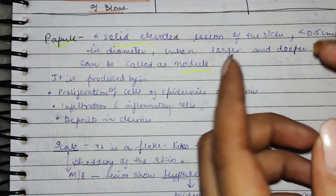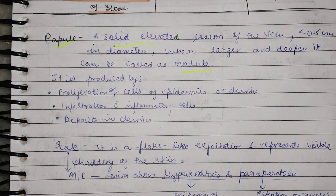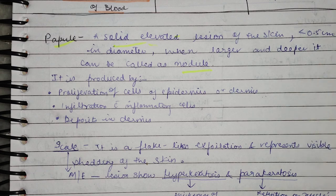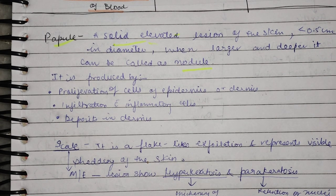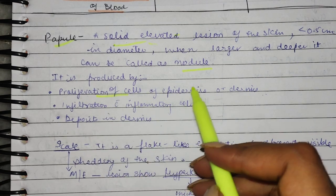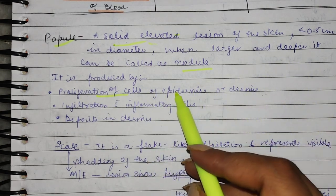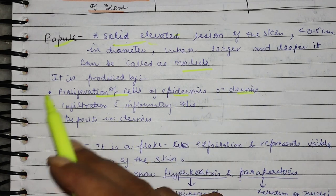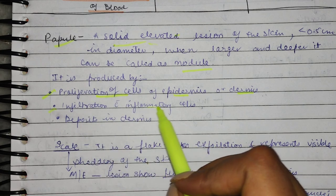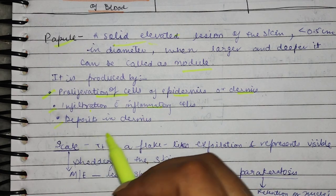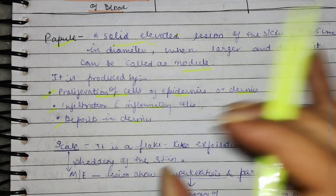When we study psoriasis, we will see what is etiology — the cell turnover is increased. Papules are formed due to proliferation of cells in the epidermis or dermis, or because of inflammatory cells, or there are many depositions of dermis. This is why papules are formed.